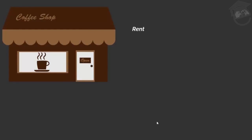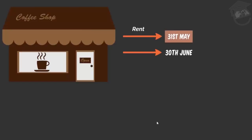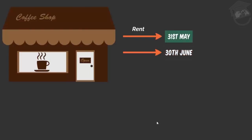Suppose the rent of my coffee shop is due to be paid on 31st of May, but I actually make the payment one month later on 30th of June. I will record this transaction on 31st of May when the rent was actually due. Because in that particular month, because of my shop, I was able to earn some revenue, so whatever expenses are due to earn that revenue will be recorded in that month only.